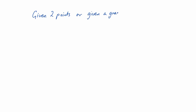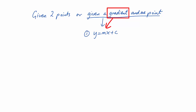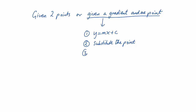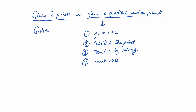In conclusion, let's think about the steps we took. We considered either being given two points or given a gradient and one point. If given a gradient and one point, write y equals mx plus c using that gradient, substitute the point in, find c by solving the equation, then write out the rule. If given two points, first draw a diagram, then find the gradient using rise over run — which puts you in the situation of having a gradient and one point. Then follow the normal procedure, choosing either of the two points to substitute in.